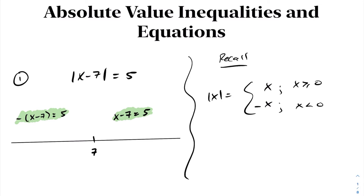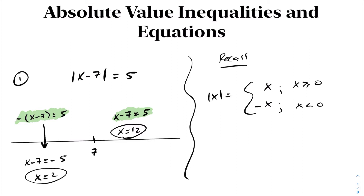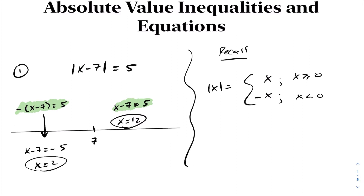Solving for x on the right-hand side, we get x is 12. Taking a look at solving the equation on the left-hand side, we get x minus 7 is negative 5, in which case x is 2. Therefore, the solution to this absolute value equation is going to be 2 and 12.